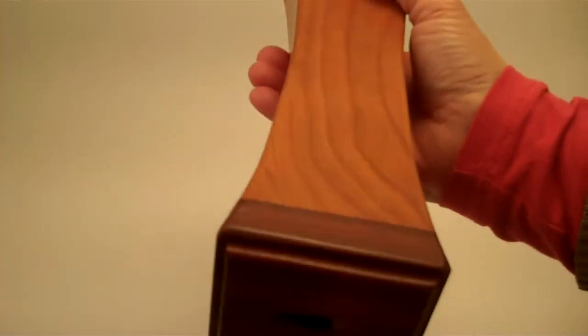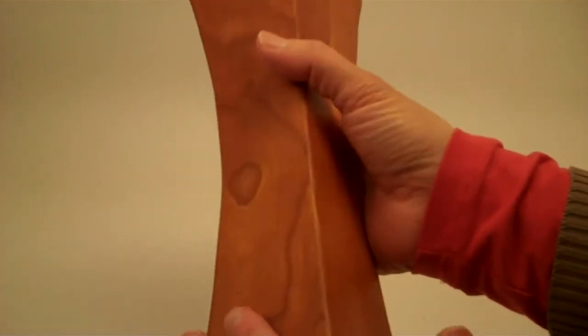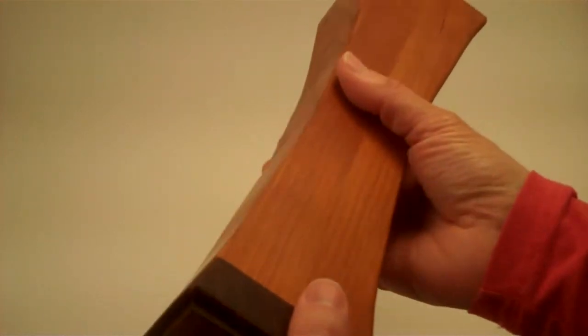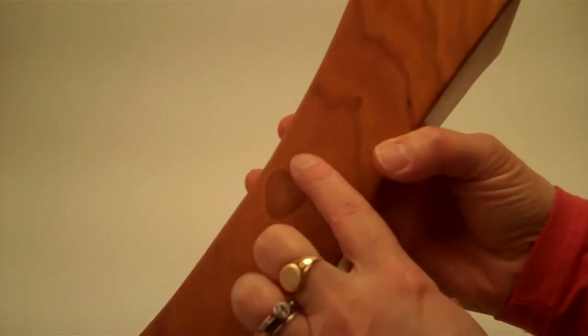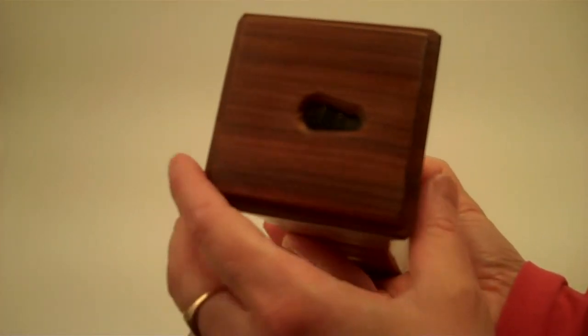The casing on this kaleidoscope is a beautiful hardwood that has been shaped in this wonderful obelisk style shape. It really shows the wood grain here as well as this beautiful wood grain in the eyepiece.